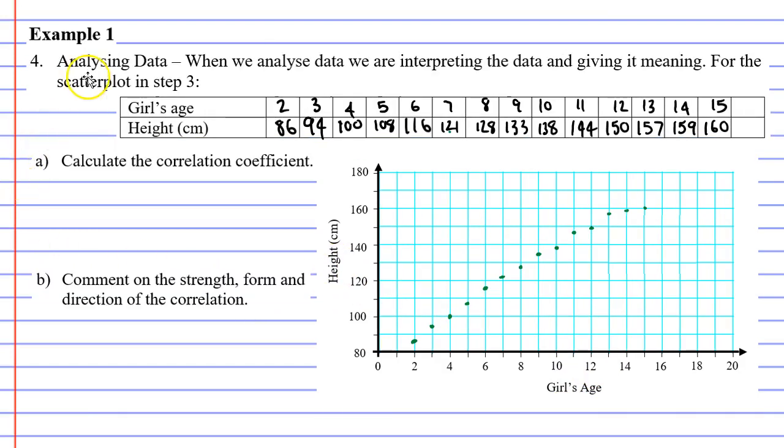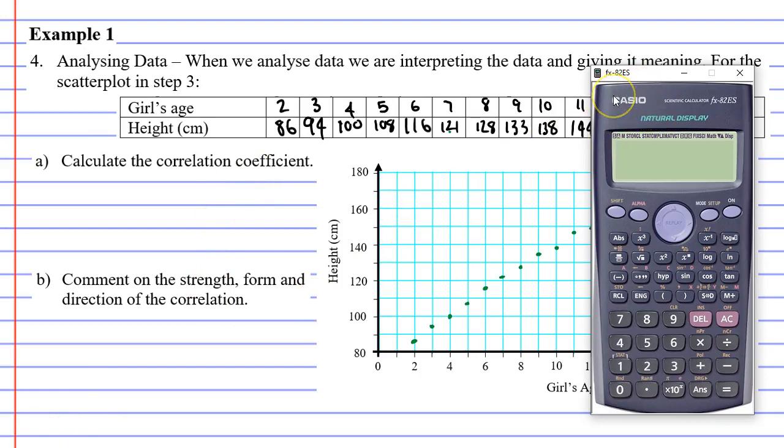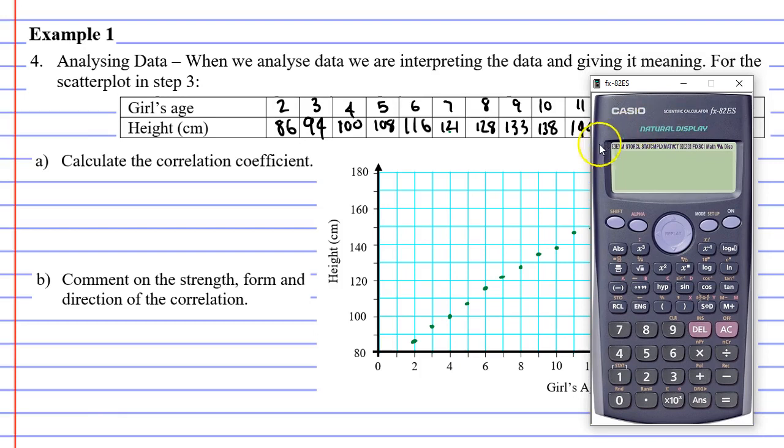All right, we'll now move on to step 4, which is about analyzing data. And when we analyze data, we are interpreting the data and giving it meaning. So what we're going to do first is make some calculations. So question A, we're going to calculate the correlation coefficient. Now, I'm going to do this using the Casio calculator. I'm not going to make a video based on a sharp calculator because I've already made some videos that show people how to use it. And this might be a good opportunity for people with sharp calculators to see how this works on a Casio calculator. So first of all, to calculate the correlation coefficient, we need to clear the calculator. So shift 9, and we'll clear number 3 for all. Yes is equals, and reset, press the AC key.